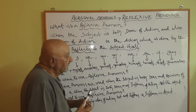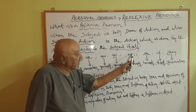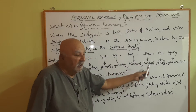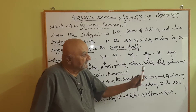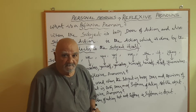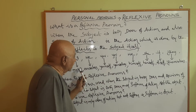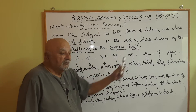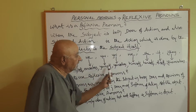If the subject is 'he', the reflexive pronoun is 'himself'. 'She' becomes 'herself'. 'It' becomes 'itself'. 'They' becomes 'themselves' — note that 'selves' is plural and 'self' is singular. These are the reflexive cases of the subjective pronouns.